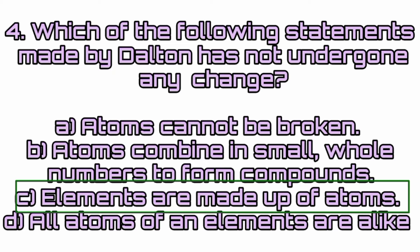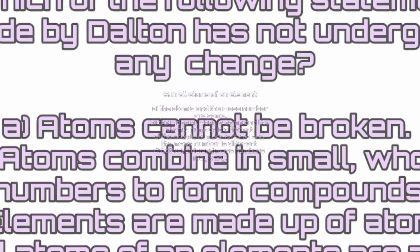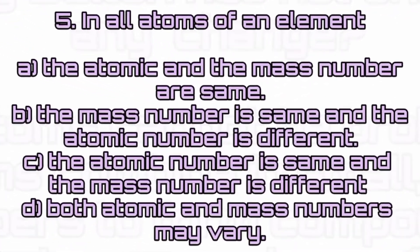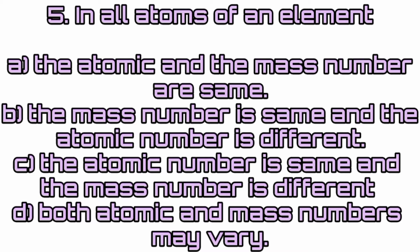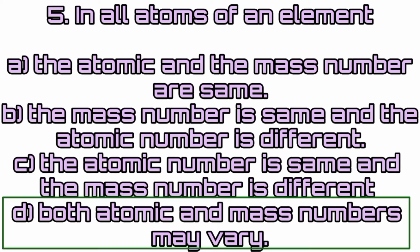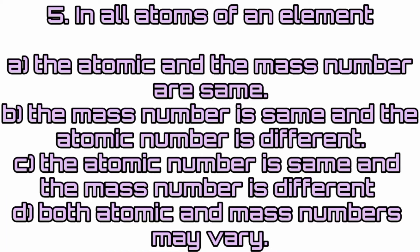Elements are made up of atoms. Fifth question: In all atoms of an element — Answer: Option D — both atomic and mass numbers may vary.